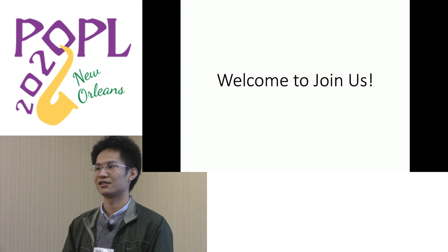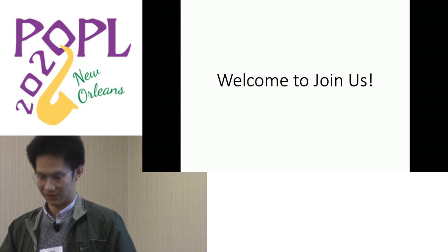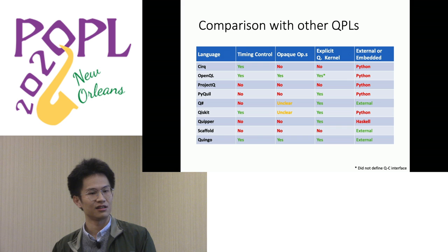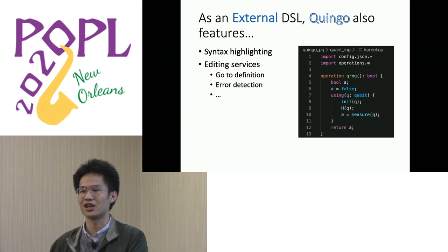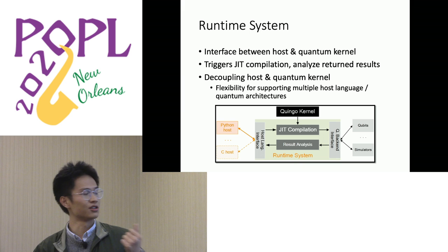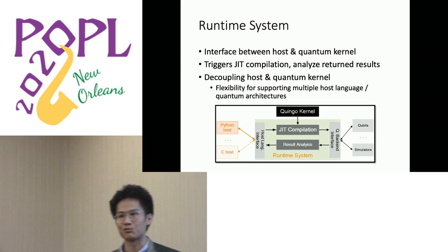Q: I had a curiosity about that last chart — why did you list being an external language as a plus? A: As an embedded language, it is often hard to develop language services or syntax highlighting. Also, as an external language, you are able to decouple the host language from the quantum part, providing flexibility in supporting various host languages.